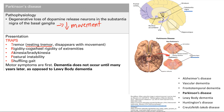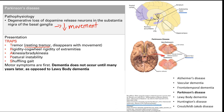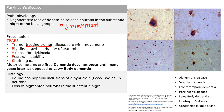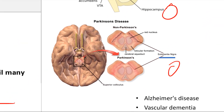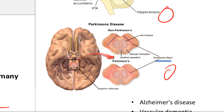Motor symptoms come first in Parkinson's, and dementia does not occur until many years later — maybe 20 years later — when they finally lose cognitive ability, memory, and personality. On histology, we see round eosinophilic inclusions of alpha-synuclein called Lewy bodies in the neurons. In the substantia nigra, where neurons produce dopamine, you normally see many pigmented neurons, but in Parkinson's the substantia nigra appears pale because those dopamine-producing neurons are lost.